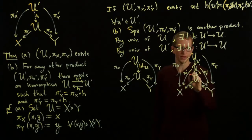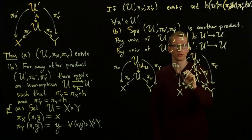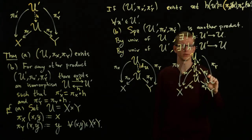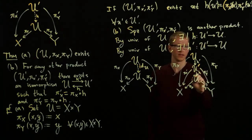So this diagram commutes because, by the universality of U prime. This part of the diagram commutes by universality of U prime as well. And these commute, oh, I forgot a prime here. Here it is. And these commute by universality of U.